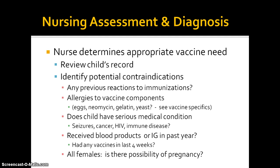Nursing assessment and diagnosis prior to giving vaccines is important. The nurse determines the appropriate vaccines that are needed. Very often there are standing orders, so the nurse makes decisions about which vaccines to give by reviewing the child's vaccine record and using the CDC immunization schedule as a guideline. We want to make sure we review and identify any possible contraindications, including previous severe reactions, allergies to vaccine components, a serious medical condition, a child who's received blood products or immune globulin recently, or had vaccines within the past four weeks.